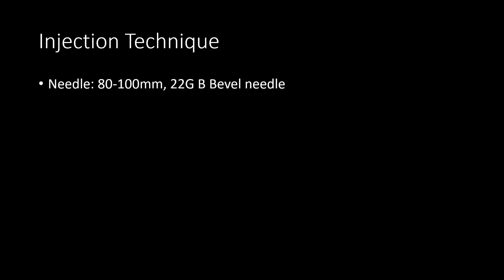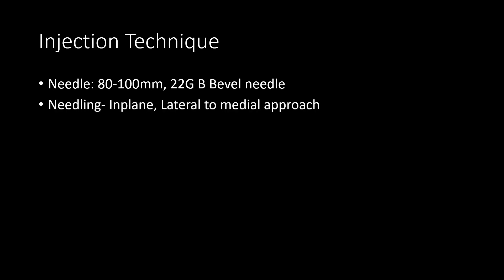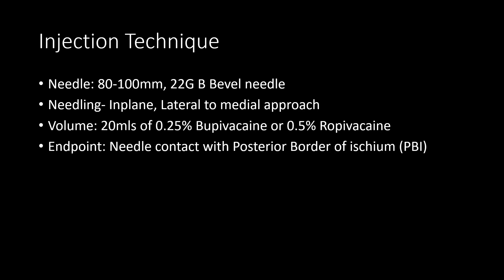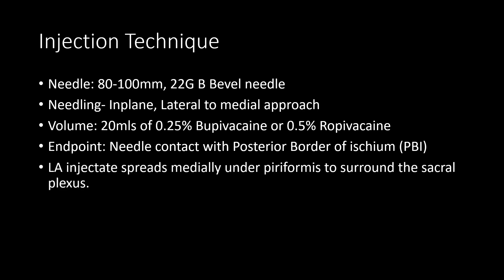Injection technique: an 80 or 100 mm echogenic P-bevel needle is passed from lateral to medial direction, in-plane, with the needle tip in contact with the posterior border of the ischium. A volume of 20 mL of 0.25% or 0.5% bupivacaine is injected, and the local anesthetic can be seen spreading under the piriformis to surround the sacral plexus.